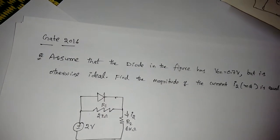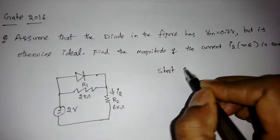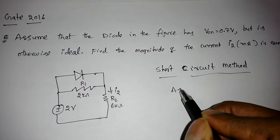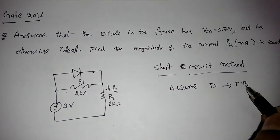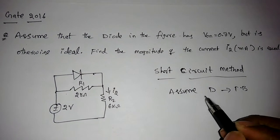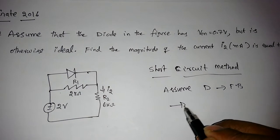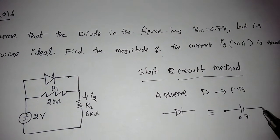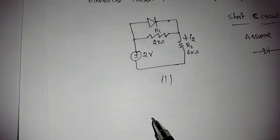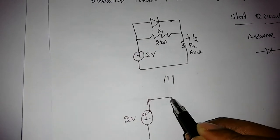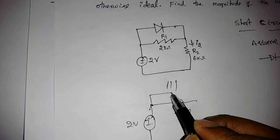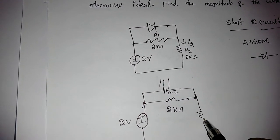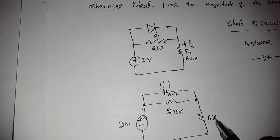We will solve this using the short circuit method. First, assume the diode is in forward bias and find the current through it. Since it is a practical diode, the equivalent model is a 0.7V voltage source. The equivalent circuit becomes: a 2V source, a 2 kΩ resistor, the diode replaced by 0.7V, and at that node a resistor R2 of 6 kΩ to ground.